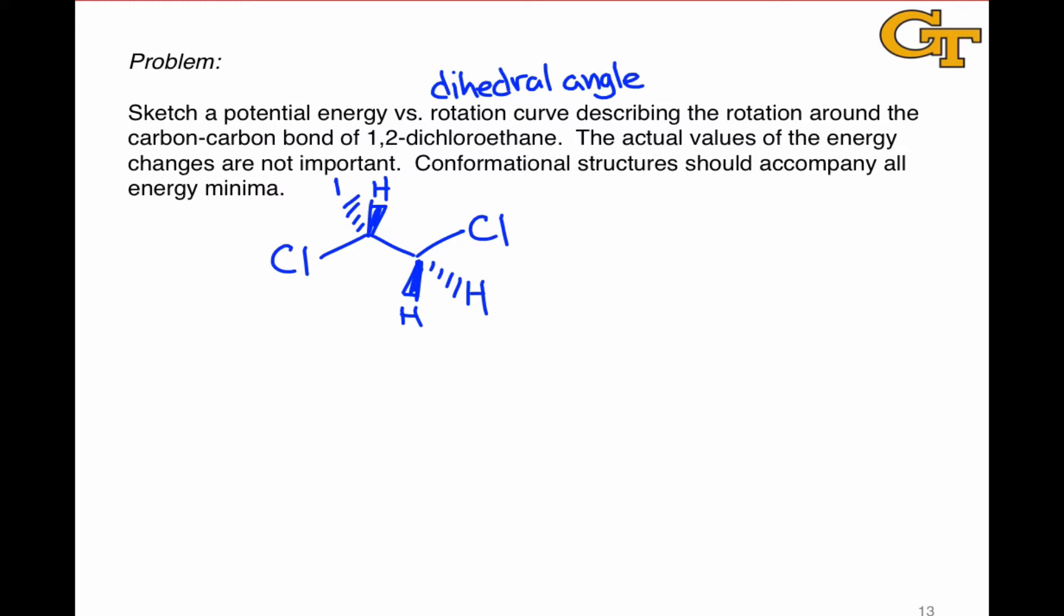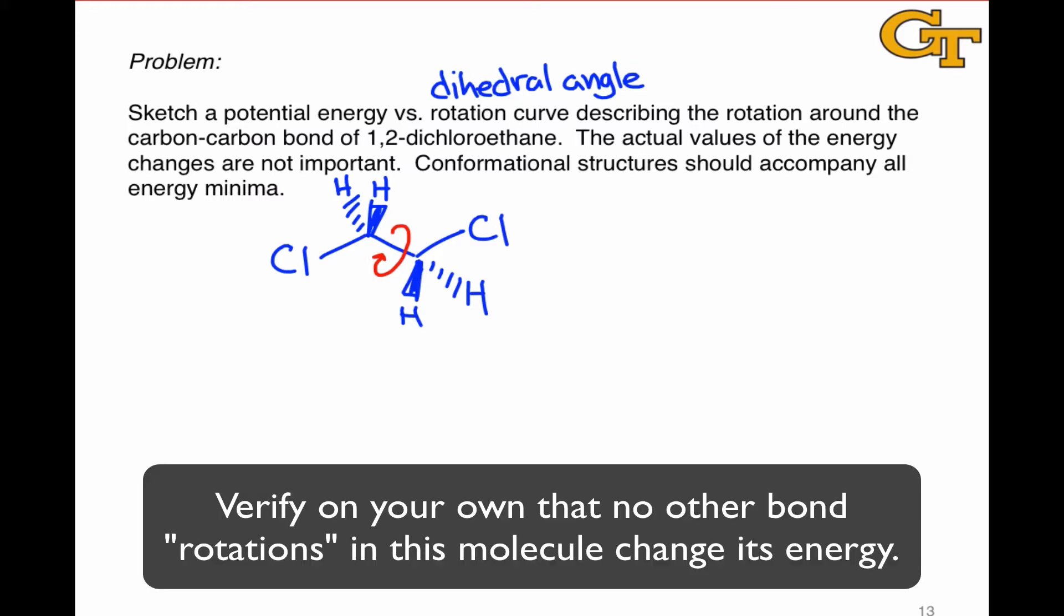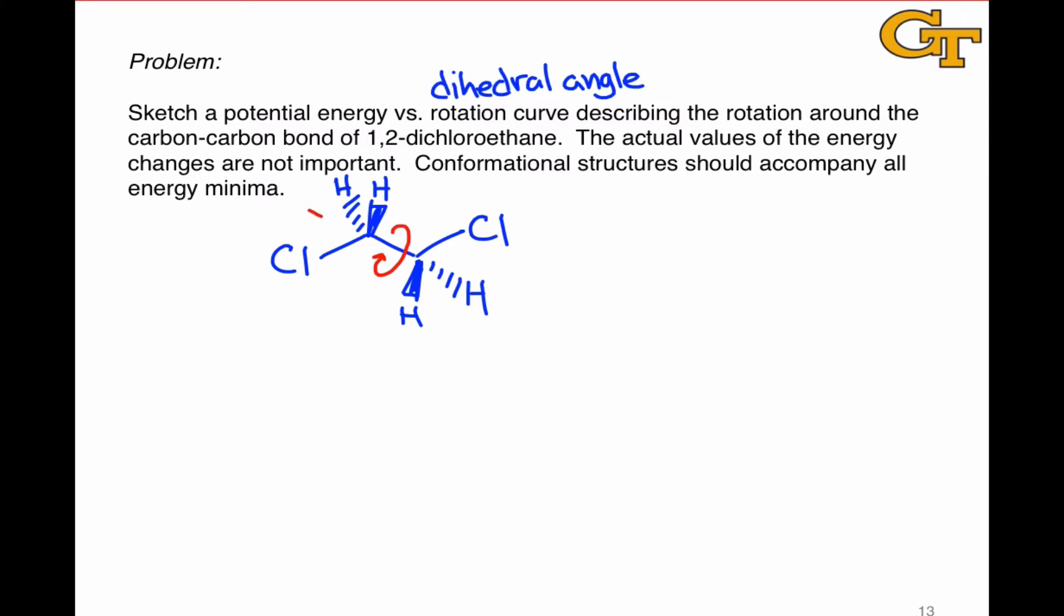1,2-dichloroethane has only single bonds, and as we've seen, rotation around single bonds is relatively easy. So what we're really interested in, in this case, is rotation about this central carbon-carbon bond, which is going to change the energy of the molecule. The dihedral angle refers to the angle looking along this direction between the carbon-chlorine bonds.